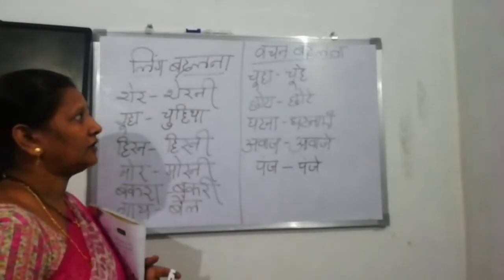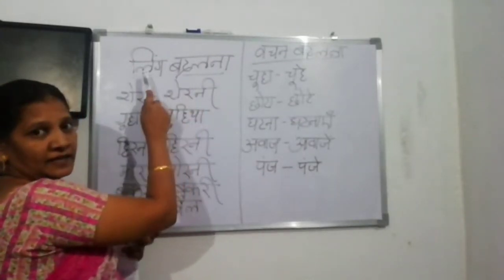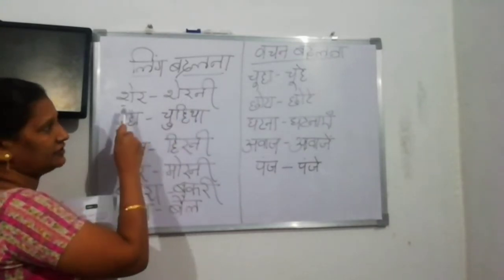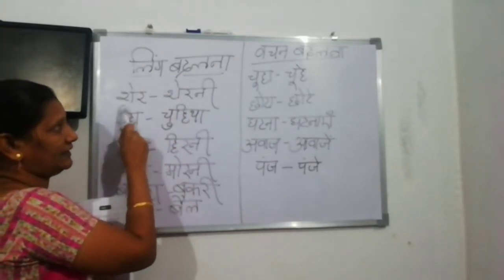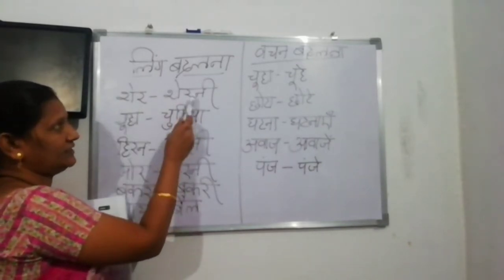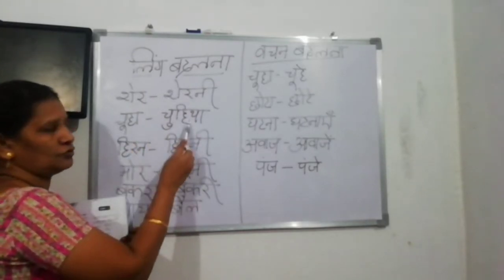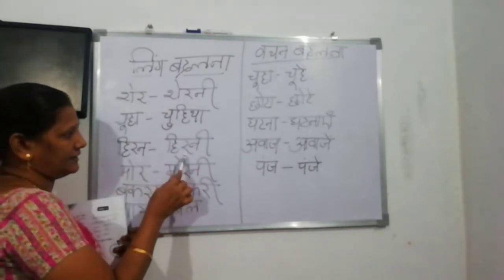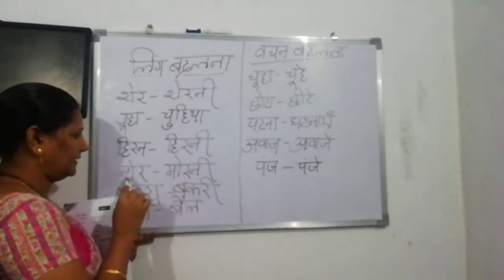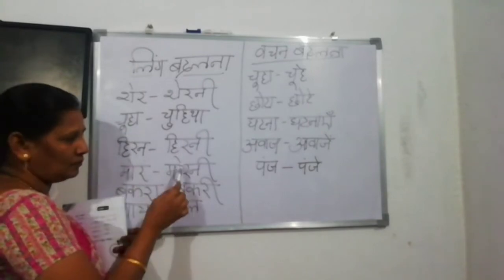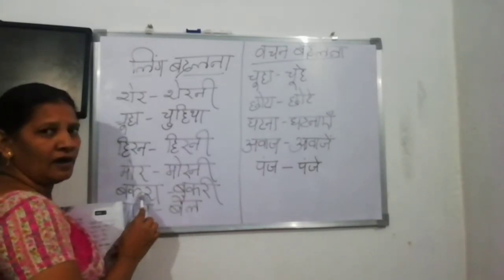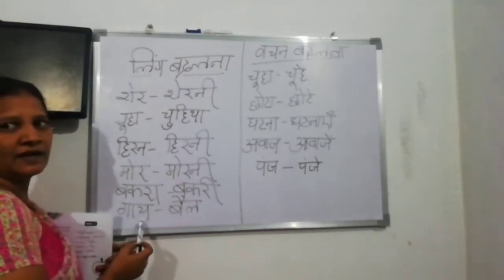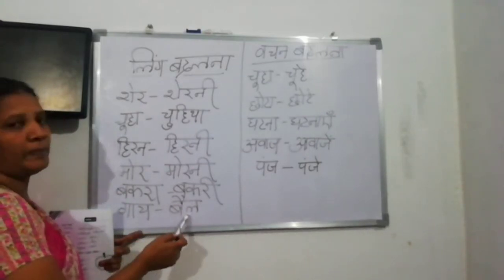Now I will explain Ling. Repeat after me: Sher — Pumling hai. Sherni — Streeling hai. Chuhha — Pumling hai. Chuhiya — Streeling hai. Hiran — Pumling hai. Hirani — Streeling hai. Mor — Pumling hai. Morni — Streeling hai. Bakara — Pumling hai. Bakari — Streeling hai. Gaay — Streeling hai. Bail — Pumling hai.